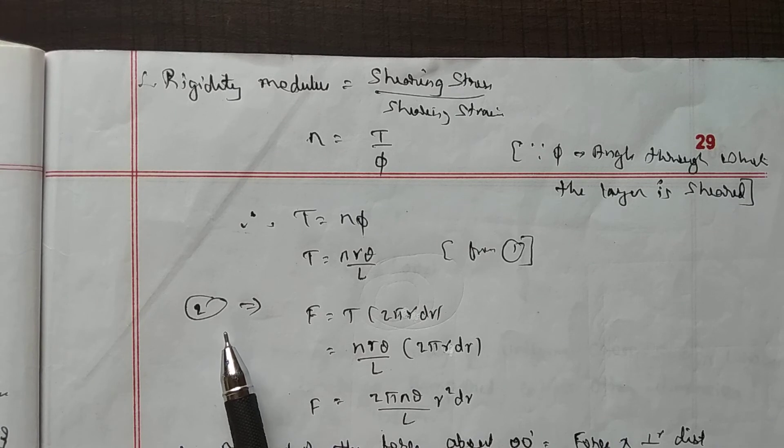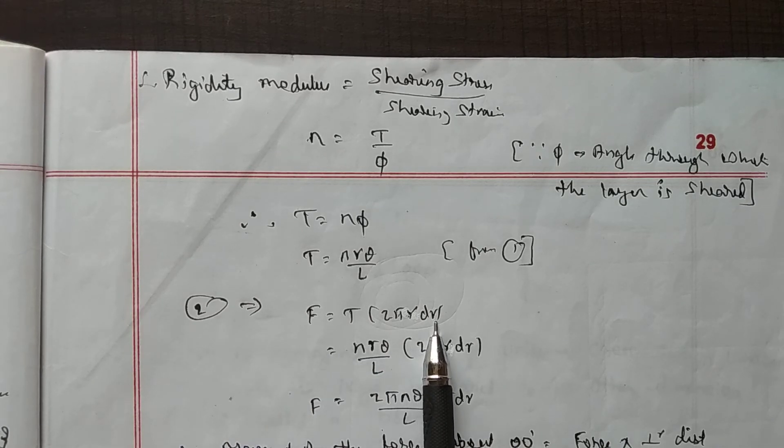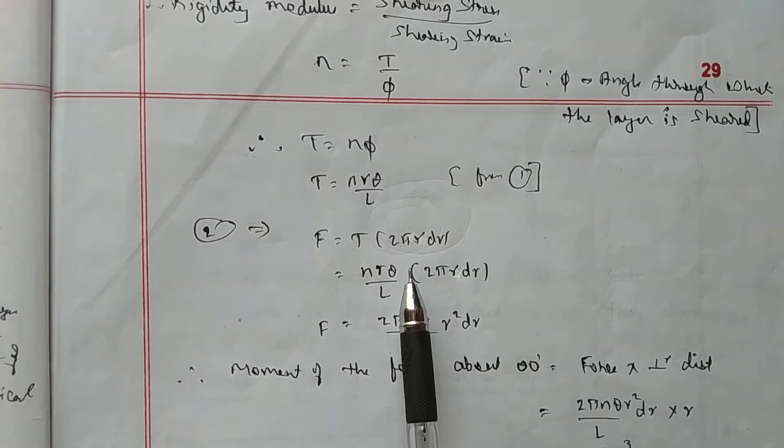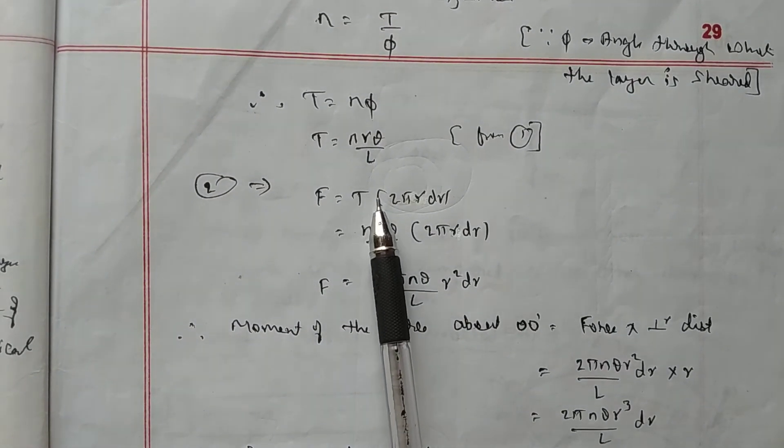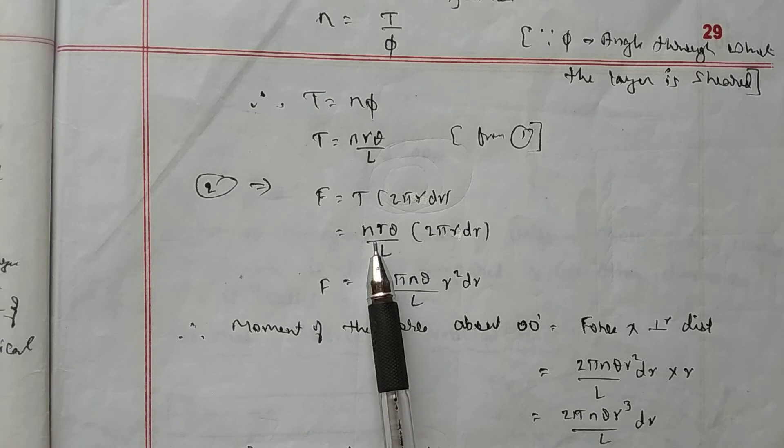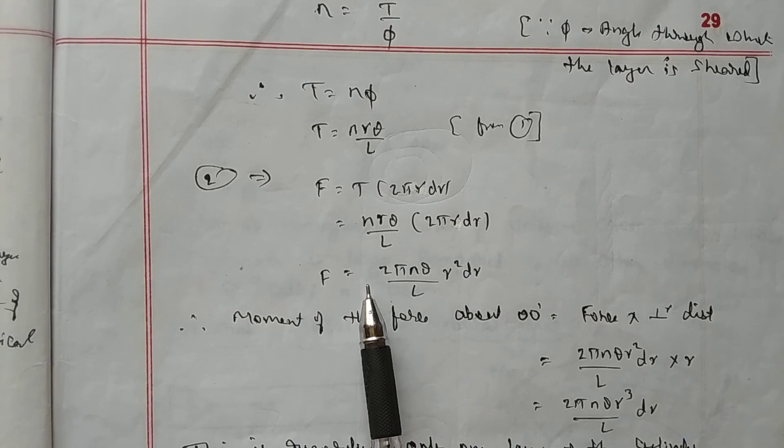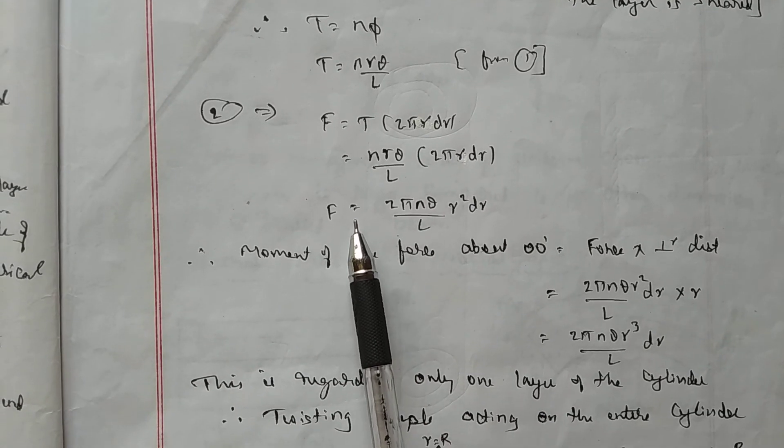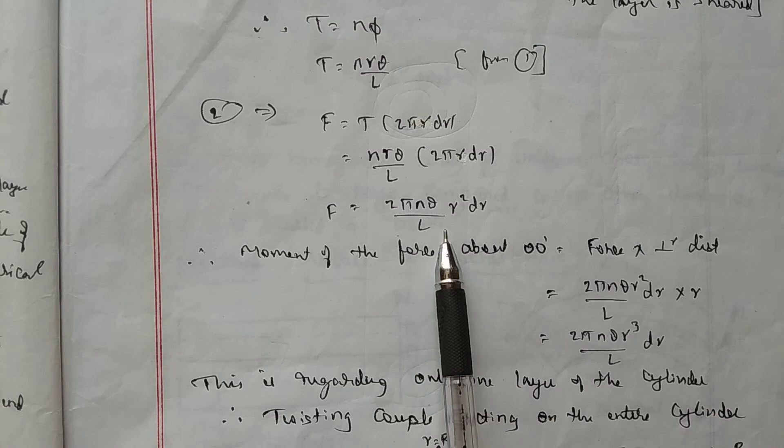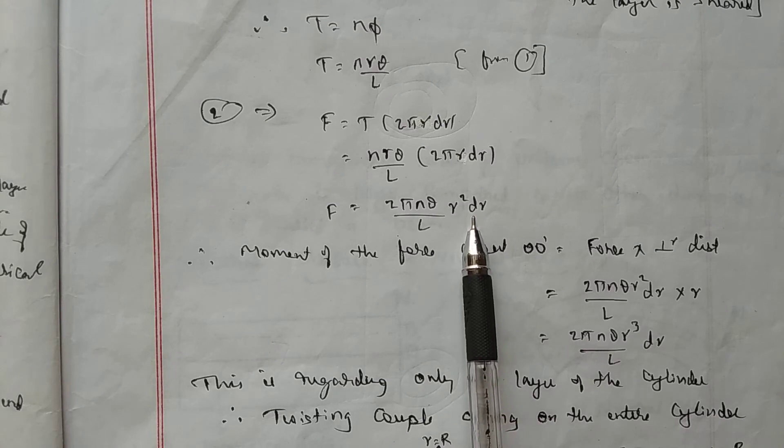Now from the equation 2, that is F equals T into 2 pi r dr, it becomes, if we substitute the value of T, it is N R theta by L into 2 pi r dr, or it is F equals 2 pi N theta by L r squared into dr.